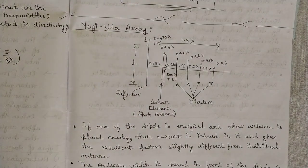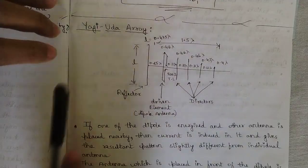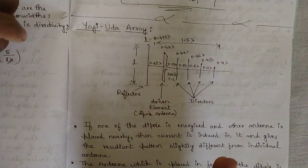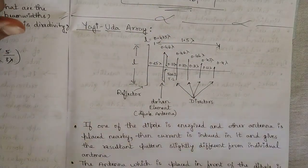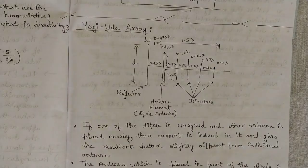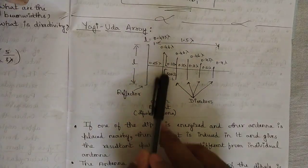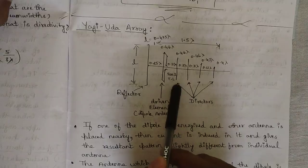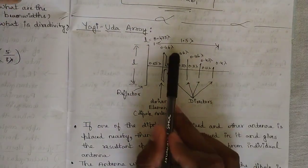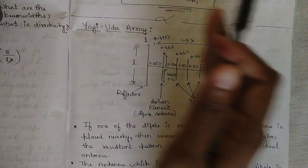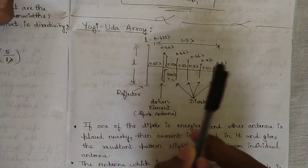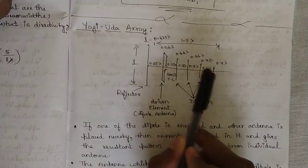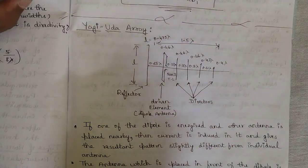Let us start with the concept of Yagi-Uda array antenna. This is the basic structure of a Yagi-Uda array antenna — you might have seen this; it was used in older times during the 80s and 90s to adjust and capture cable TV signals by turning the antenna. The lines represent the driven elements, also called dipole antennas, divided into different sets of directors. Starting from the biggest length, each director becomes smaller, with a fixed length of 0.31 lambda, and these are called Yagi-Uda array directors.